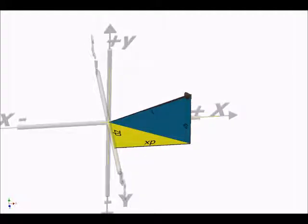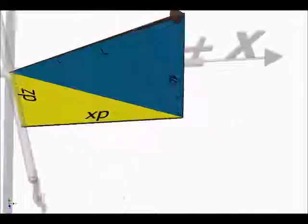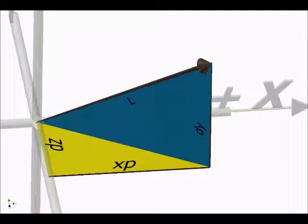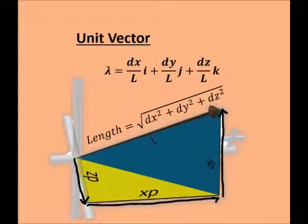Study these triangles again. Let's make it generic with dx, dy, dz, and l for length, and this is our unit vector.